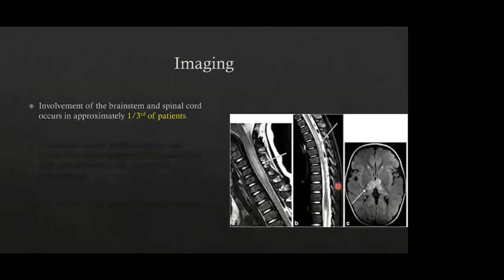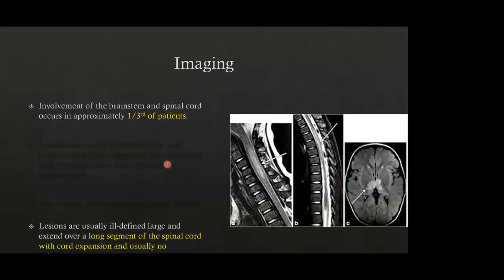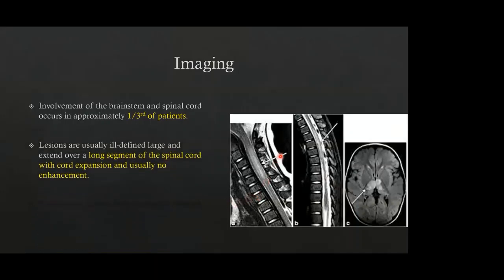Imaging findings in ADEM: involvement of the brainstem and spinal cord occurs in approximately one-third of patients. Lesions are usually ill-defined, large, and extend over long segments of the spinal cord with cord expansion. There is usually no enhancement. On these images, involvement of the cervical as well as the thoracic cord is seen, along with characteristic bilateral deep gray matter lesions involving the thalami, confirming the diagnosis.